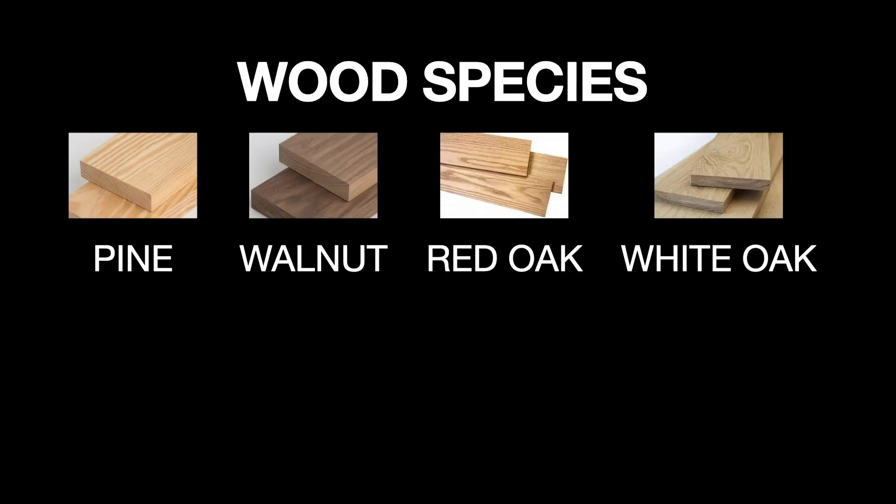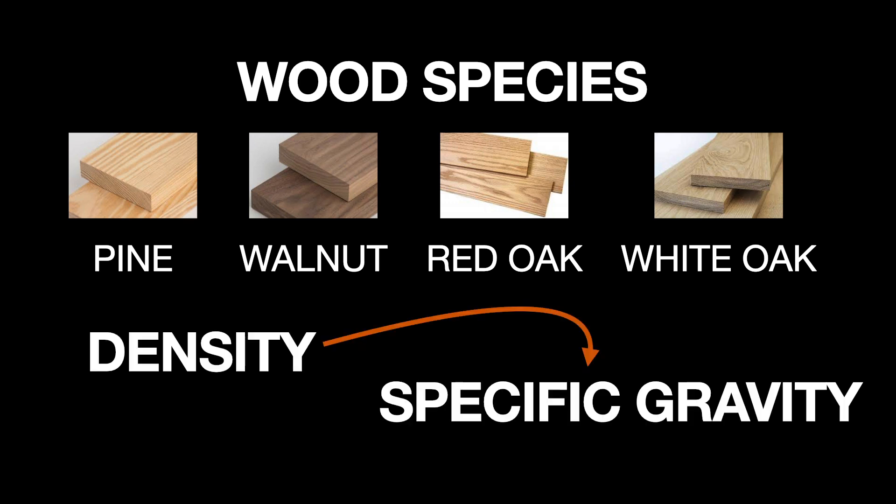The wood species is an important factor. Each species will dry a little differently. One main reason is the wood's density. Another name for the density is called specific gravity.